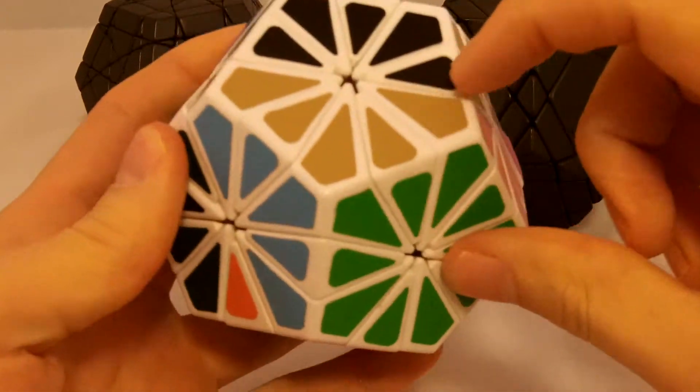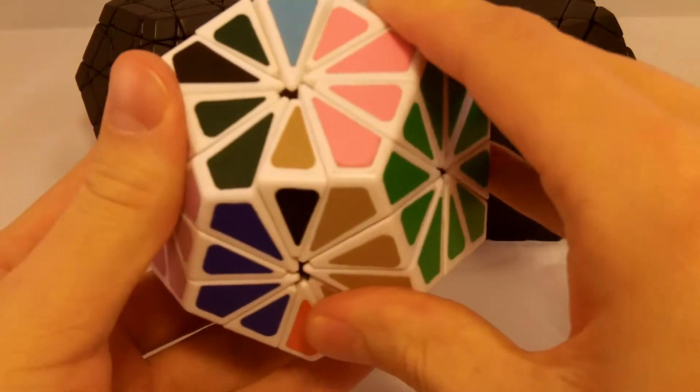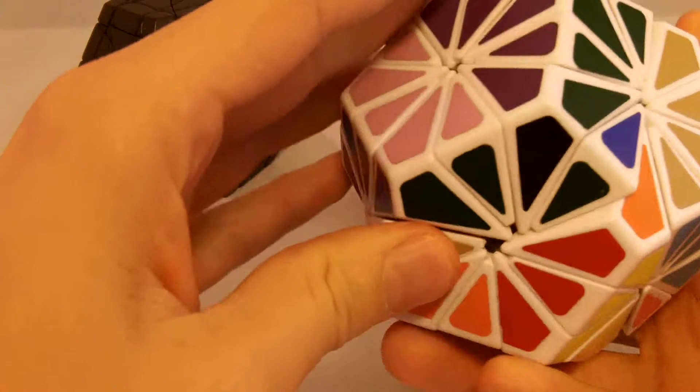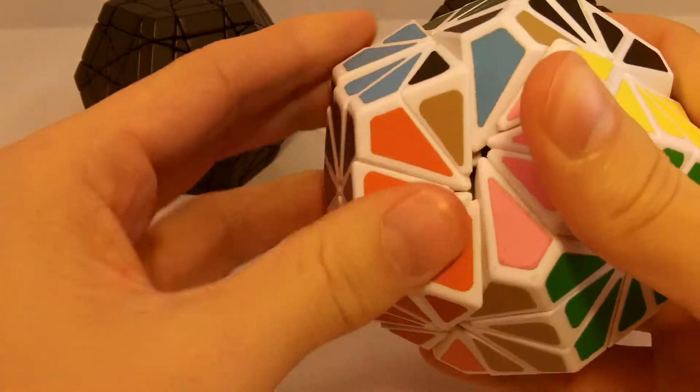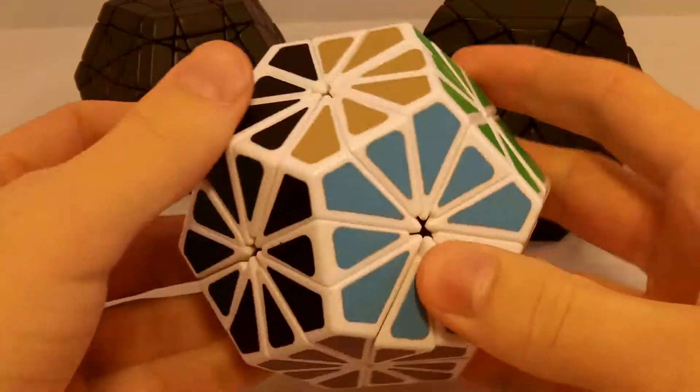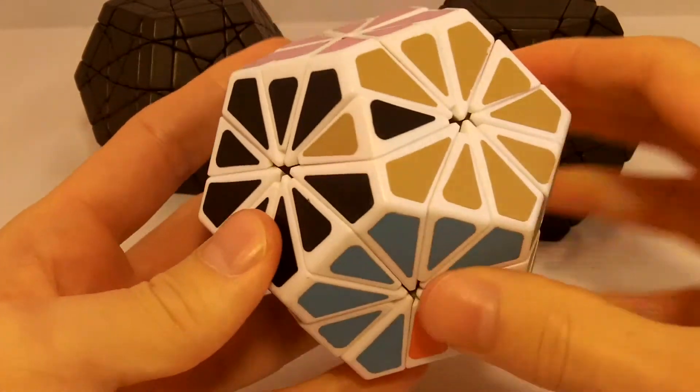Now I'm going to flip this piece upside down. Okay. Now I'm going to replace it with this piece over here. Now I'm going to undo the flip. Now I'm going to undo the replacement. Now I'm going to undo the setup move. There we go.